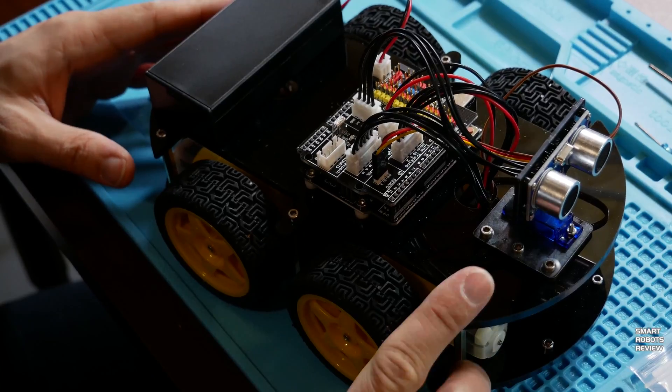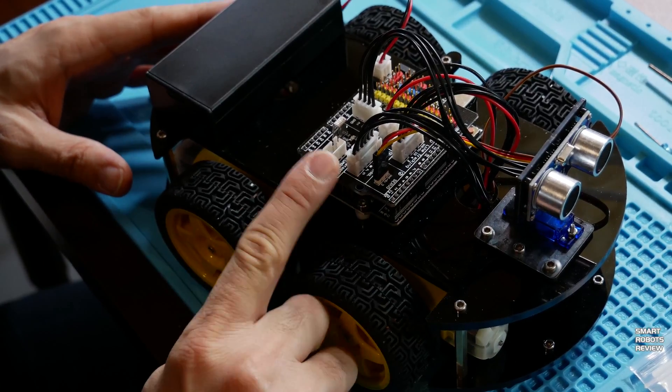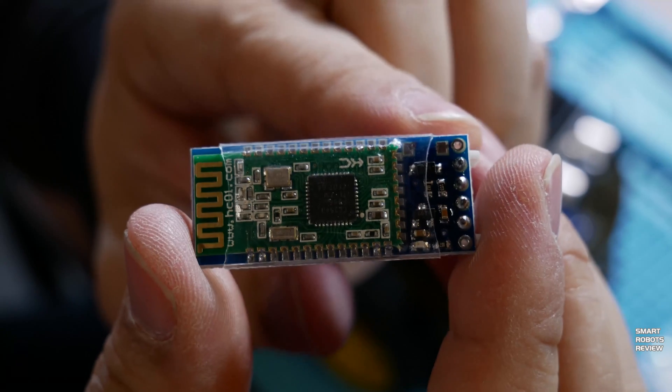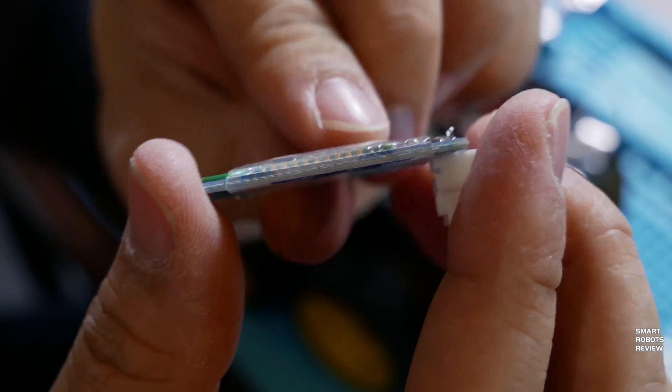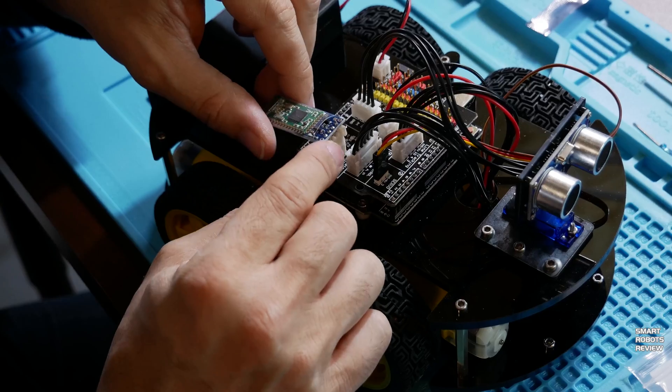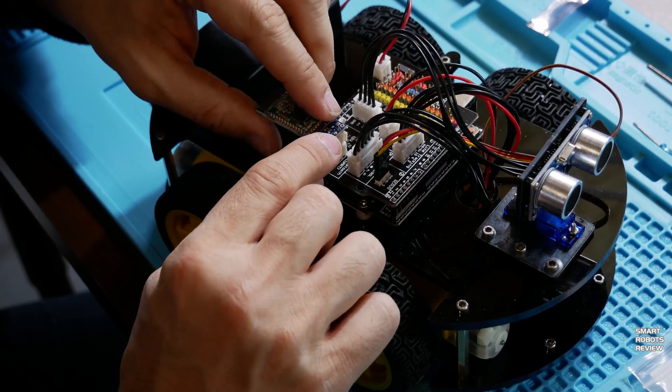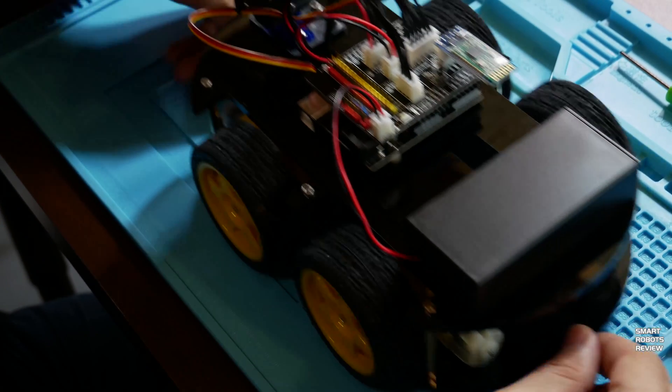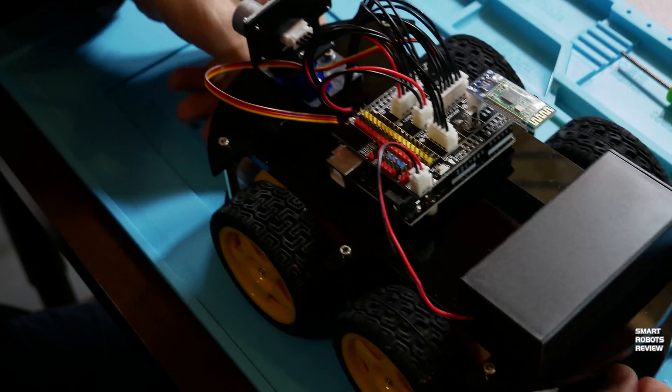What did we forget? Ah, of course, the Bluetooth module. Let's get it out of the static bag and installed. No cables required for this one. It's going to be a really easy step because all you have to do is snap it in. And guess what? We're done with the assembly, which means we're just getting started.